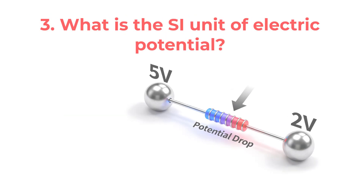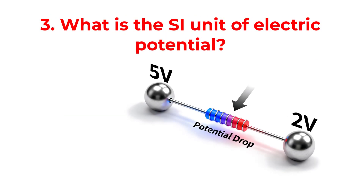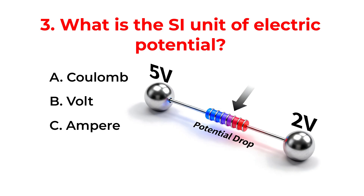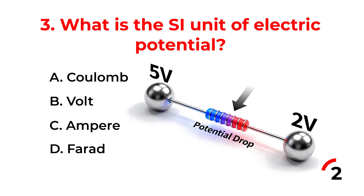What is the SI unit of electric potential? A. Coulomb. B. Volt. C. Ampere. D. Farad. Correct answer is option B. Volt.